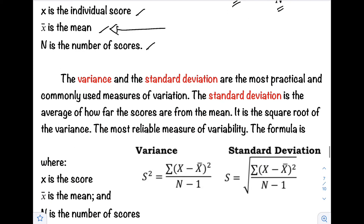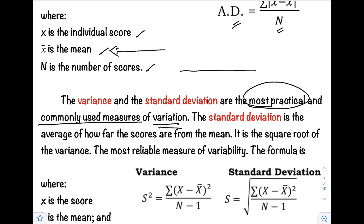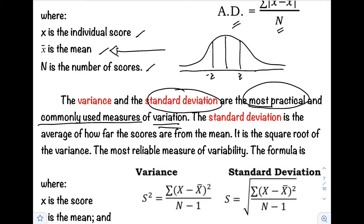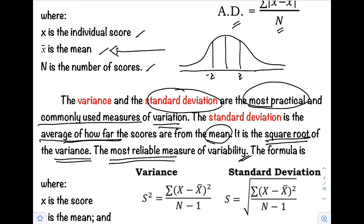Next, we have the variance and standard deviation — these are the most practical and commonly used measures of variation. If you remember our topic about the normal curve, the z-score uses the standard deviation. Standard deviation is the average of how far the scores are from the mean. To solve for the standard deviation, just get the square root of the variance. Standard deviation is the most reliable measure of variability.